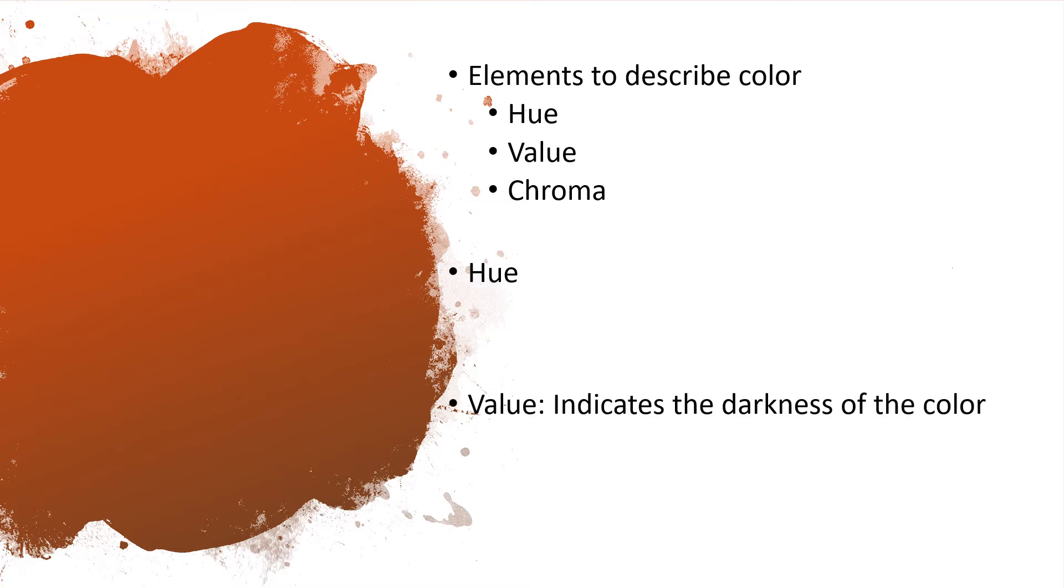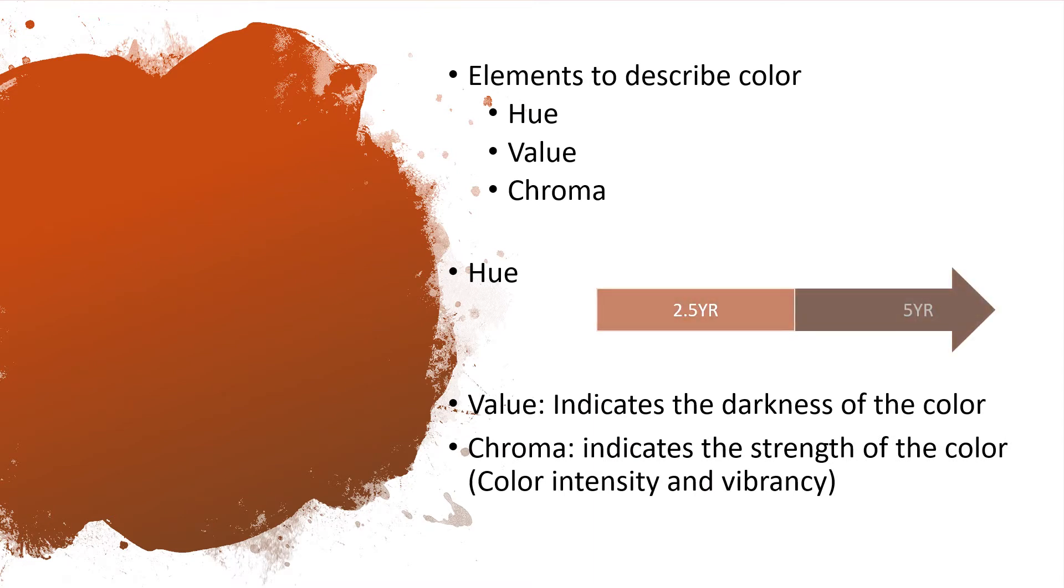This hue usually values change, the hue changes within the hue color chart. And it increases in 2.5 increments in the chart and hue becomes more yellow as the value increases. For example, if it is 2.5YR compared to 5YR, the 2.5YR is less yellow than 5YR.